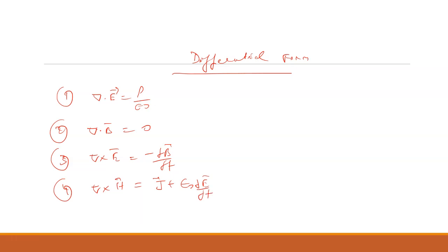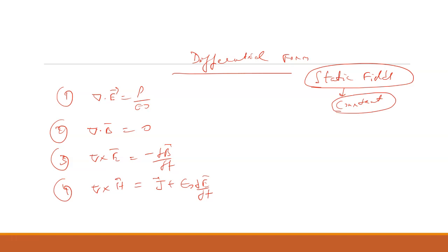Now, what is the meaning of static fields? Static field means the fields that are constant — not changing with time. So if something is constant, its time derivative is zero. For example, if y is constant, then dy by dt equals zero.